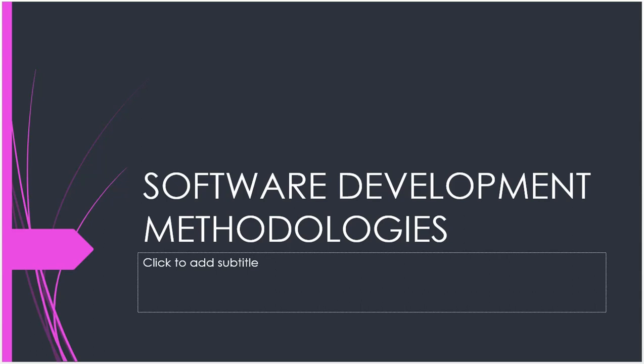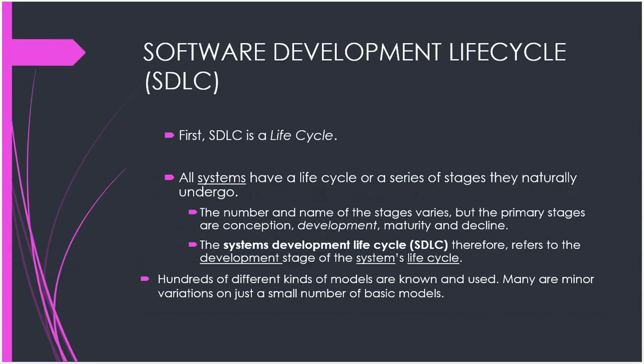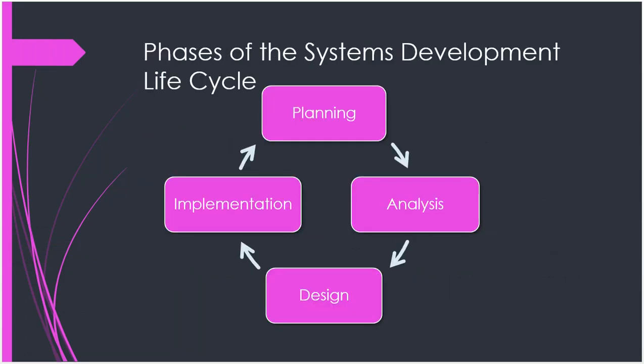Welcome to this lecture on software development methodologies. We're going to look at the various models used in the process of developing software. We've learned that there's the software development lifecycle with certain phases: planning, which includes project initiation, feasibility studies, project management, scheduling, timelines, and milestones; then analysis, where we do requirements gathering and data modeling; then design, where we create system architectures and specifications; and finally implementation, where we develop, test, deploy, and maintain the system.